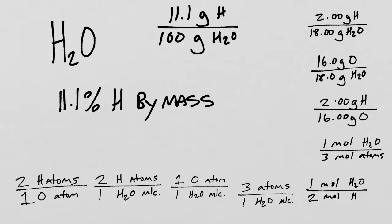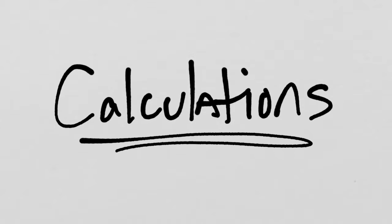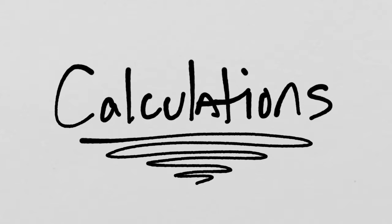I think that's about all the conversion factors we can pull from water. Maybe you can think of a few more; if you do, let me know in the comments. Otherwise, we can apply this same principle to any molecule, and so we can find any kind of relationship we want: atoms to atoms, moles to moles, grams to grams. This is a useful tool to develop and add to your chemistry toolbox. In the next video, we will do some calculations using conversion factors.